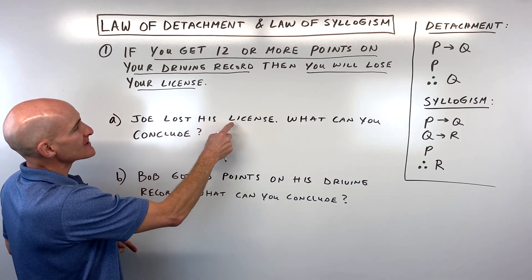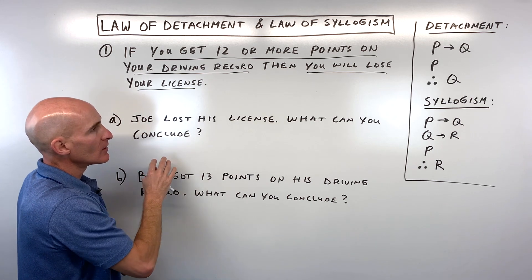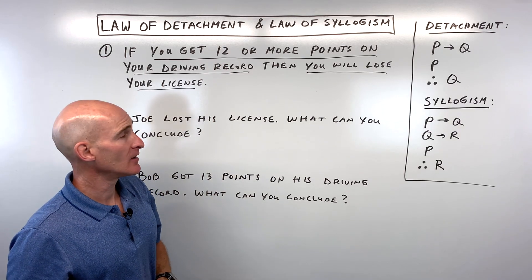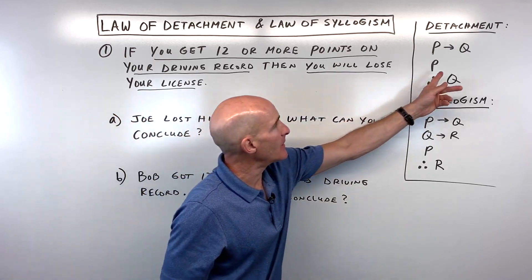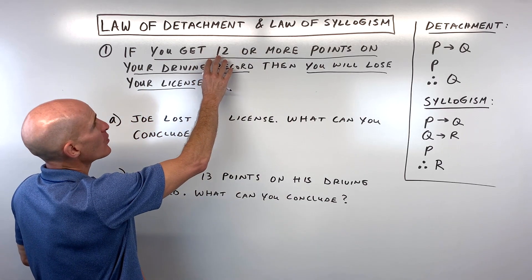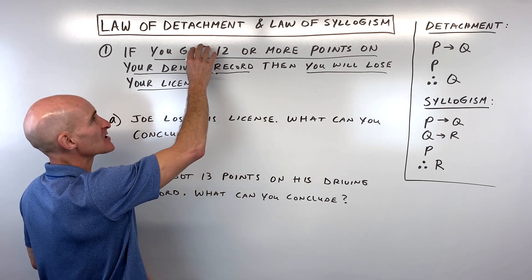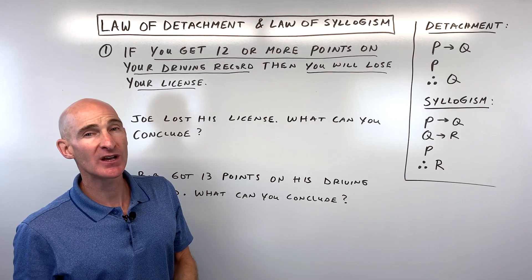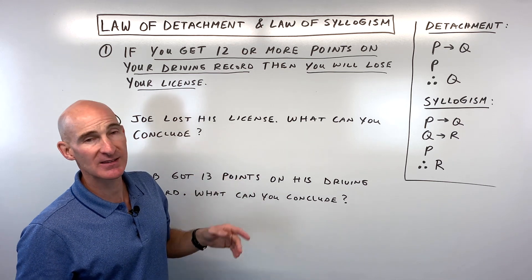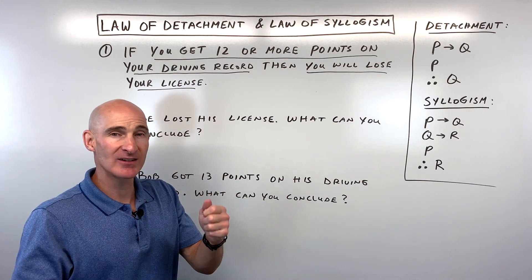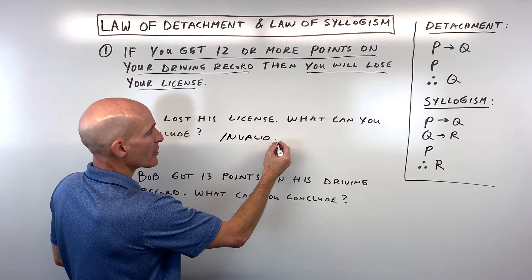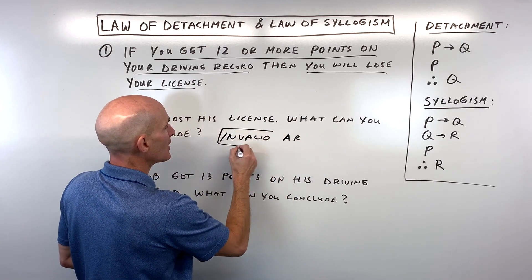Let's look at part A: Joe lost his license — what can you conclude? They're saying it backwards. They're saying if Q happens, P must have been the cause of it, which is not true. Getting 12 or more points is what caused you to lose your license. Losing your license doesn't necessarily mean it was caused by getting 12 or more points — you may have lost your license because you failed to pay the license fee, didn't pass the vision test, the driving test, or some other reason. So this is what we call an invalid argument.